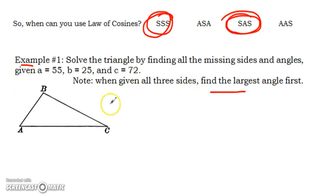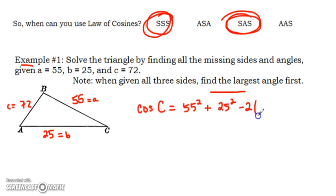When you're given all three sides, which is what we're given right now, we're going to find the largest angle first. Across from side A is 55 units, that'd be 25 units, and C is 72. Of these three, angle C would be the largest because 72 is the largest side length. So we are going to set up cosine of C equals a², so 55², plus b², 25², minus c², 72².